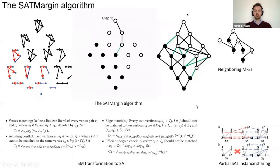We also constructed a partial SAT instance sharing mechanism. The neighboring MFS, if you look at their graph, are very similar except one or two edges difference. So when we get the instance from a SAT solution, we can use this partial solution to construct the mapping for the new instance, which is a neighboring MFS. By this we can reduce the time cost for the FSM algorithm. This is the overview of the SATMargin algorithm.